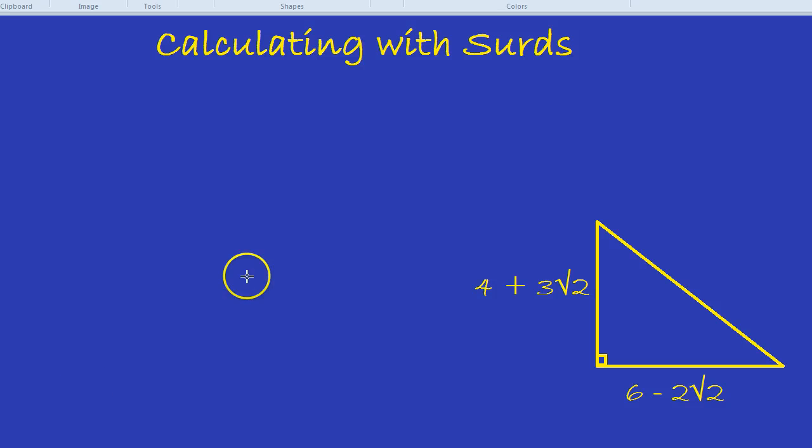Today we're going to learn some interesting things about surds, which are those lovely square root symbols or root symbols. It could be square root, cube root, any time you see that radical symbol.